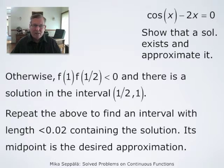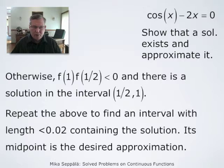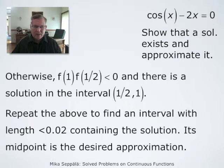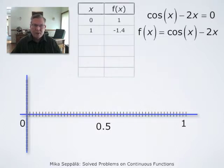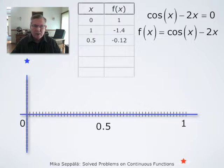We repeat this by making the interval shorter — splitting it in two halves, where one half always contains a solution. The half containing a solution is identified by computing the product of f at the endpoints: if the product is negative, that interval contains a solution by IVT. Graphically, we look at the interval from 0 to 1: f(0) = 1 (blue dot) and f(1) ≈ -1.4 (red dot). One is positive, one is negative, and between them there is a solution.